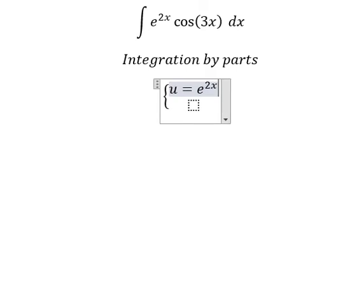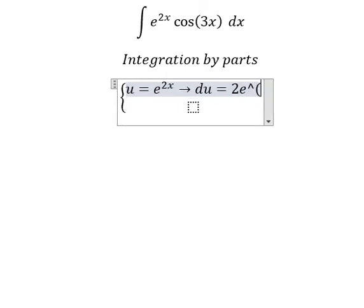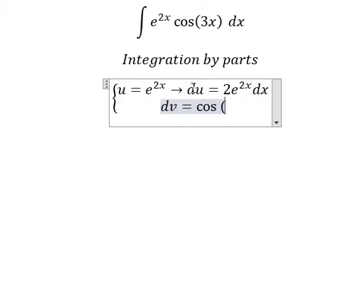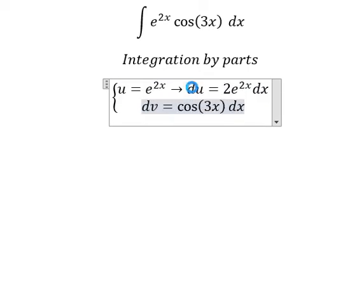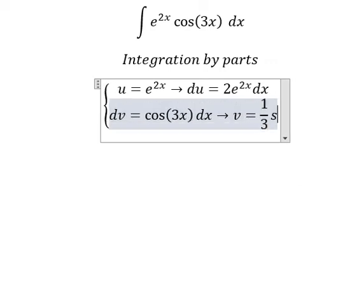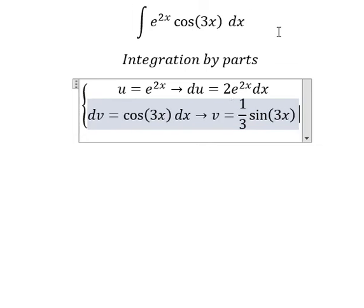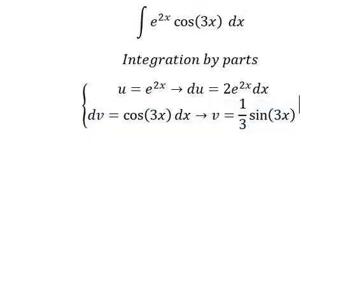du we have 2e to the power of 2x dx. dv we have cosine 3x dx. The integration of this one, we have v equals to 1 over 3 sine 3x.